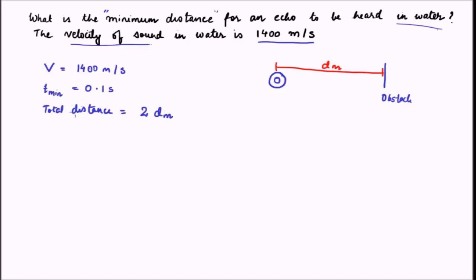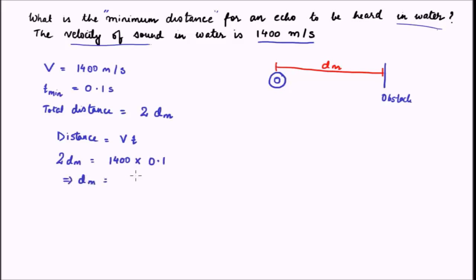With this data we can say that distance equals velocity times time. Just replacing the values: the total distance is 2dm, the velocity is 1400 meters per second, and the minimum time is 0.1 second. On simplifying, dm equals 140 divided by 2, that is 70 meters. So this is the minimum distance inside water for the echo to be heard.